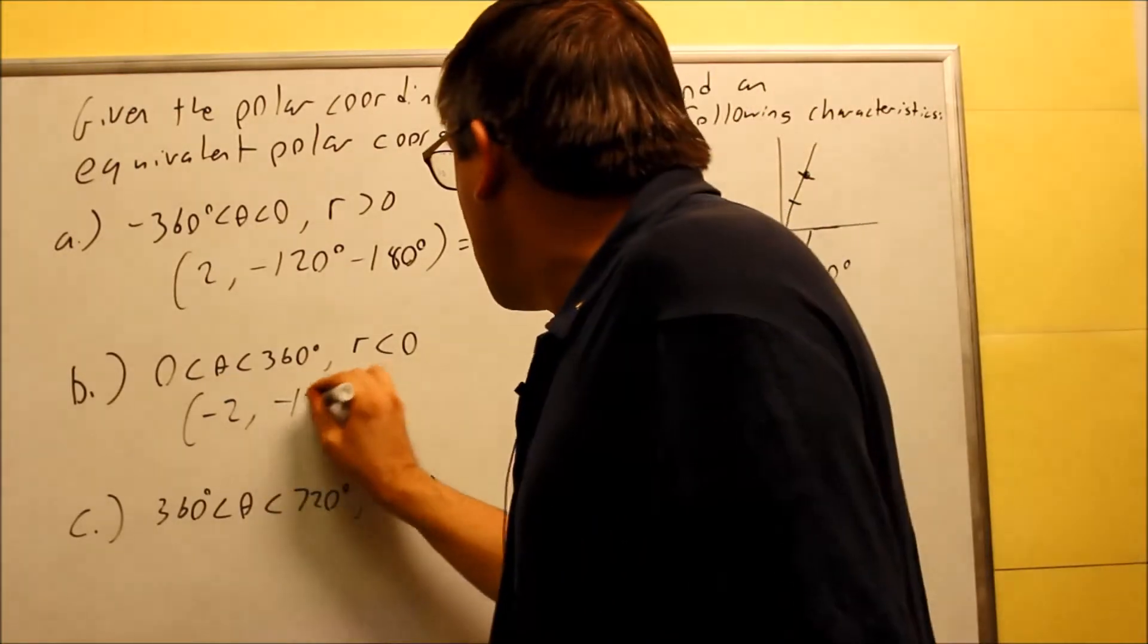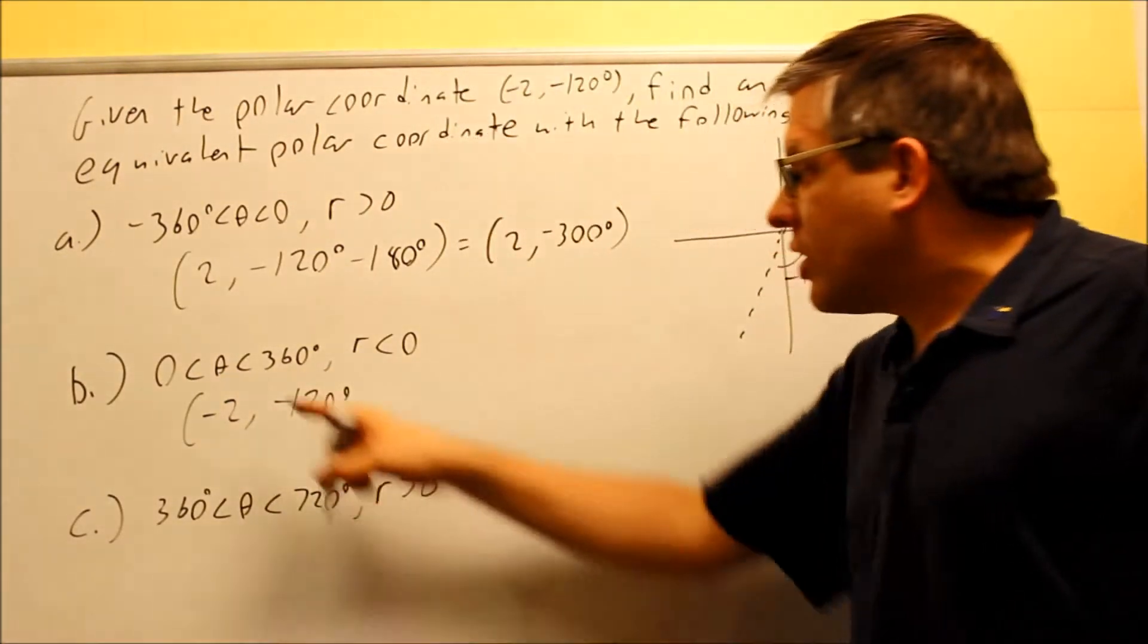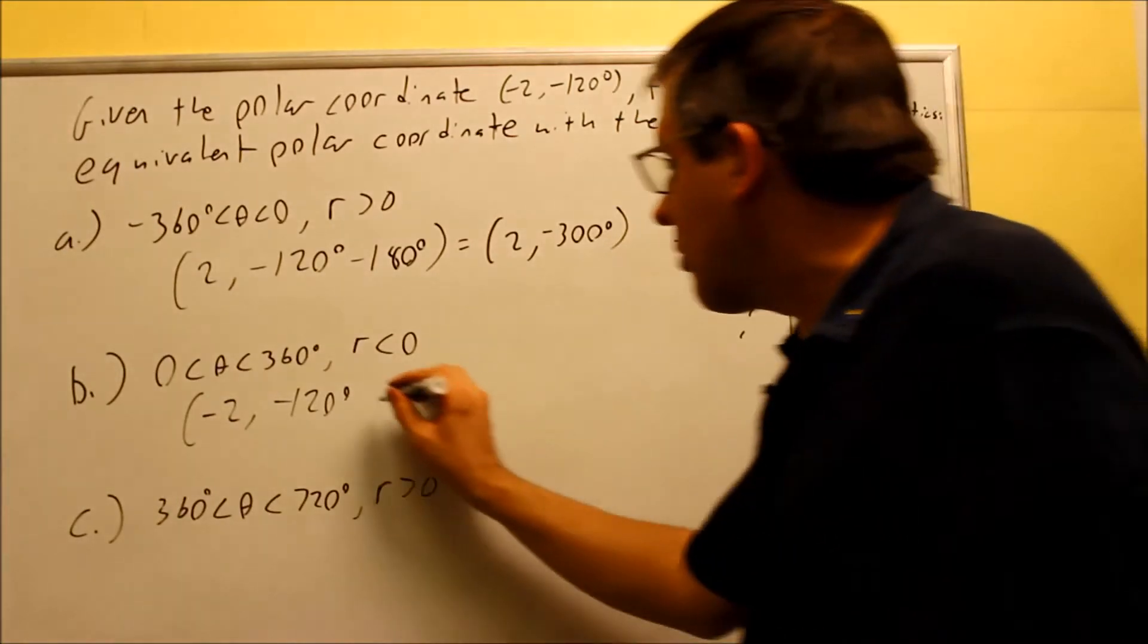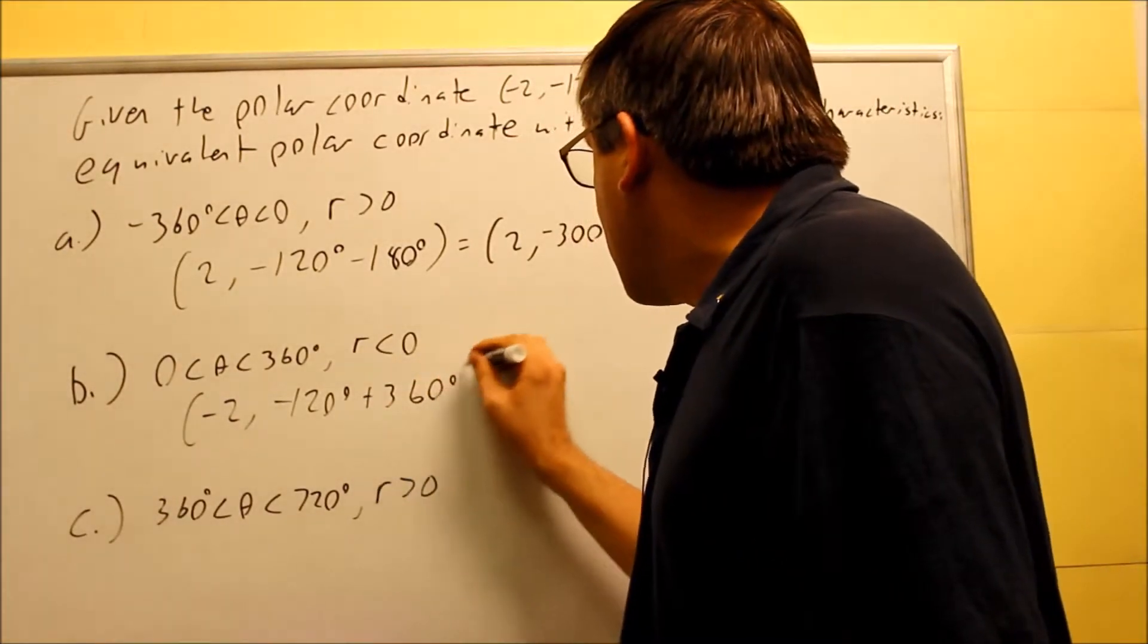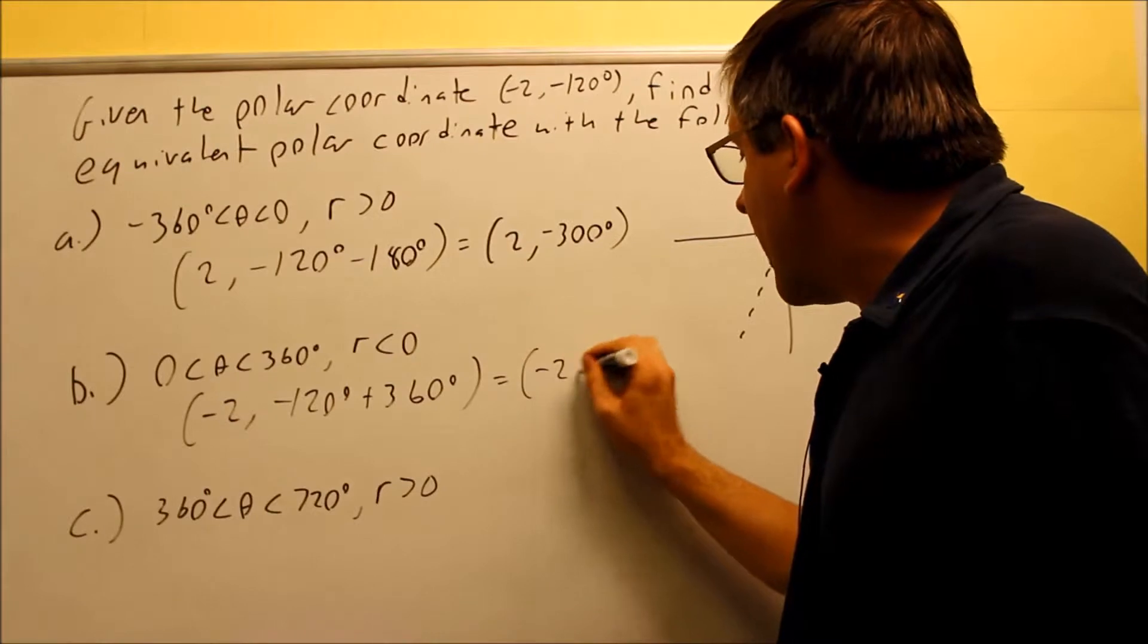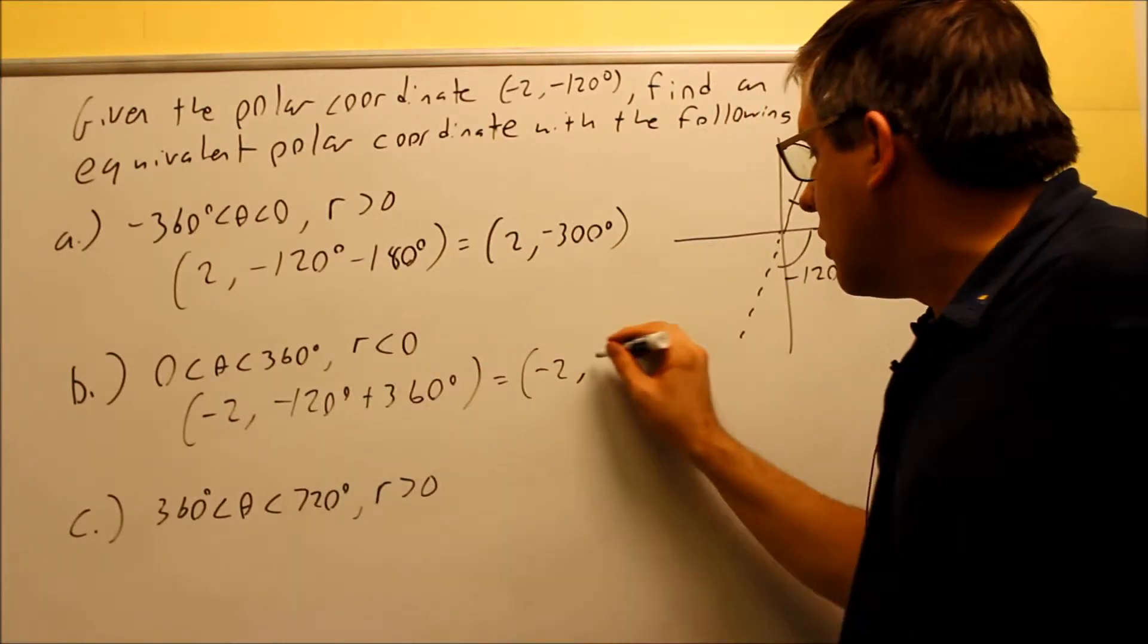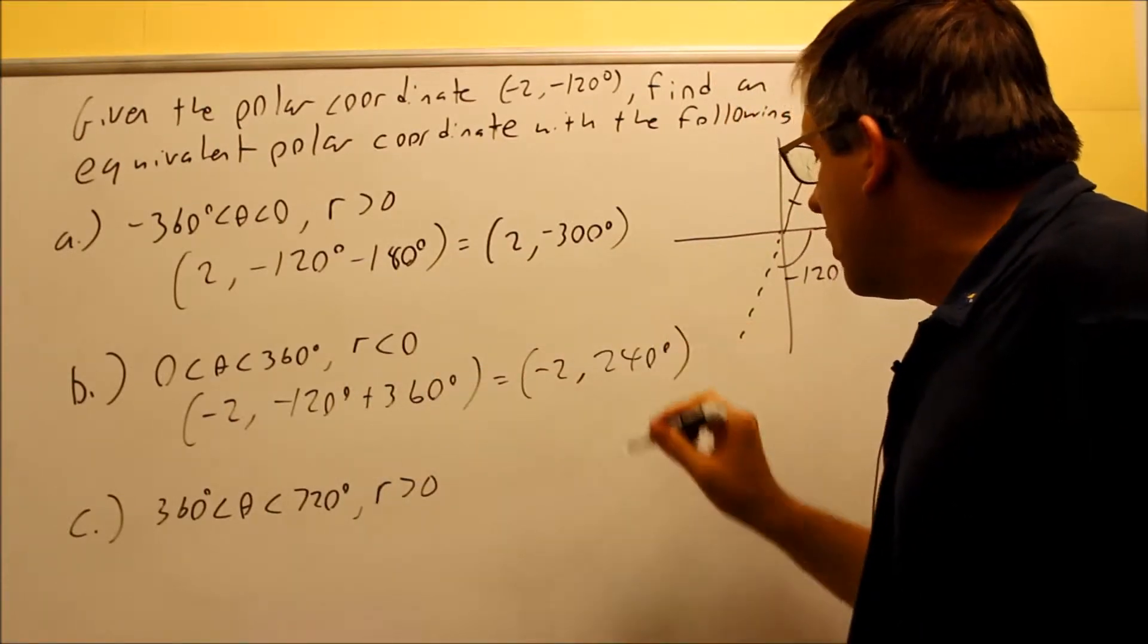So I'm starting with negative 120, and I want the angle to end up positive, so I'm going to choose to add 360 this time. When I simplify it, I get negative 2, and I get 240 degrees.